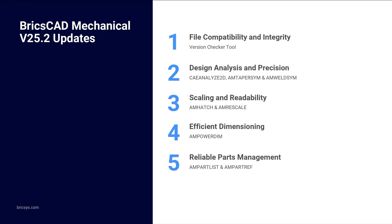In this session, we explored key enhancements in BricsCAD Mechanical V25.2 for 2D mechanical design and drafting. Highlights include the version checker for secure DWG handling and the CAE Analyze 2D command for finite element analysis. We also introduced AM TaperSim for customisable taper symbols, and updated AM Datum ID and AM FC Frame for efficient symbol management. The AM WeldSim command now supports complex welding symbols, while AM Hatch and AM Rescale improve scaling and readability. The PowerDimension command offers a more intuitive interface, and part list and BOM settings have been refined for a smoother experience. These updates streamline workflows, making BricsCAD Mechanical more efficient and user-friendly.